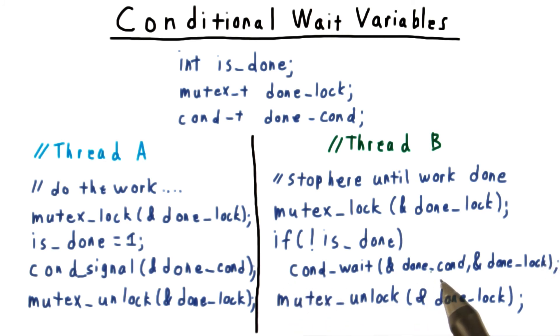And of course, the cond_wait method had better unlock the mutex. Otherwise, thread A would never be able to acquire it, and change the condition that we're waiting on.